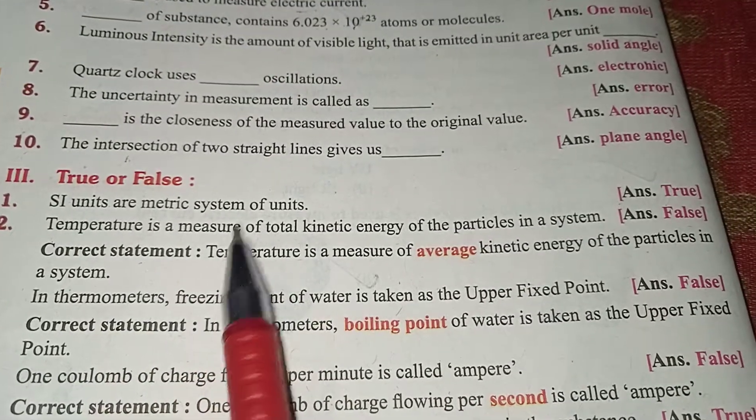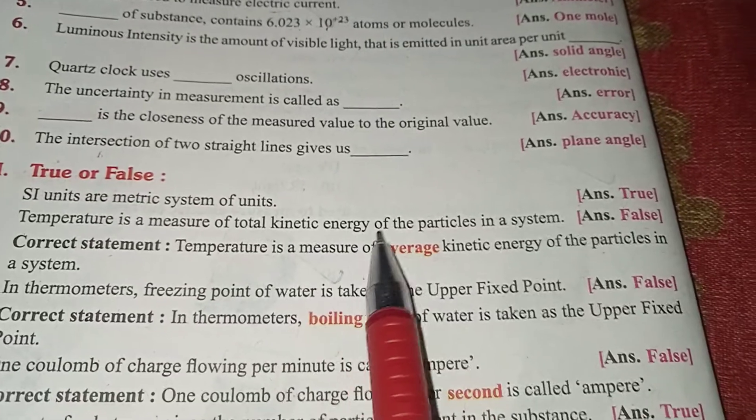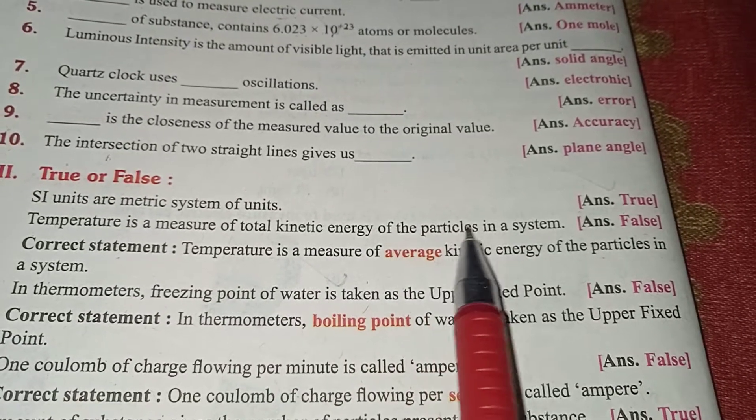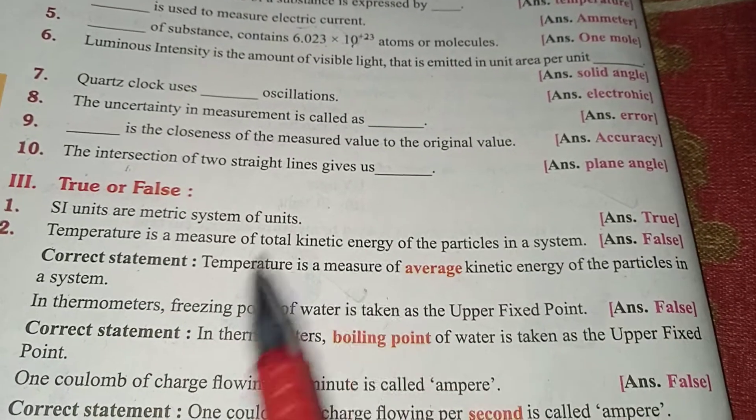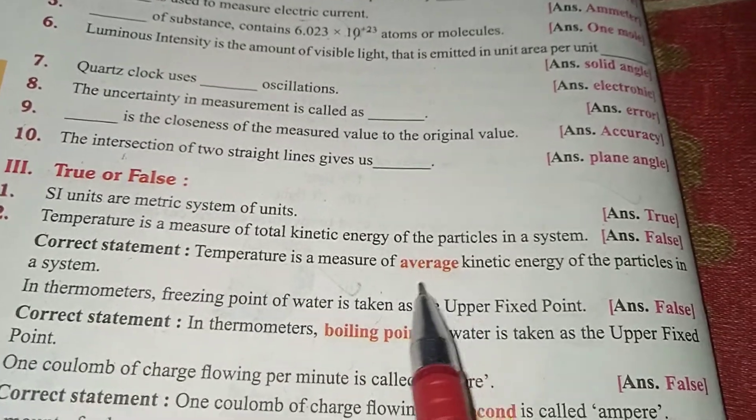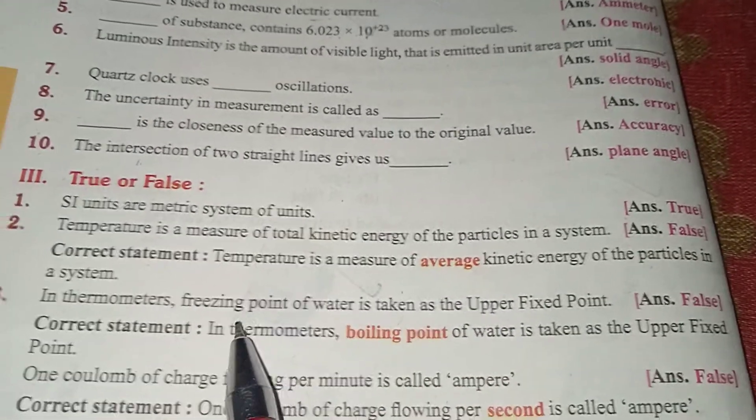Temperature is the measure of total kinetic energy of the particles in a system. False. Temperature is the measure of average kinetic energy of the particles in a system.